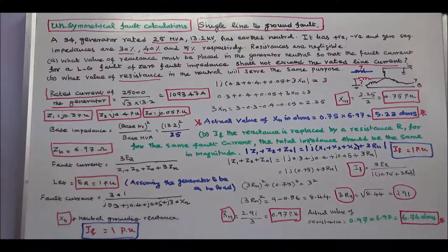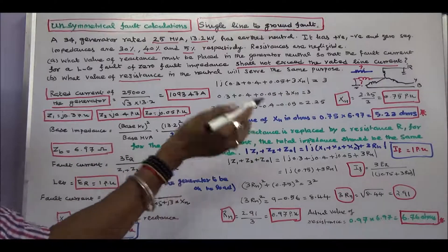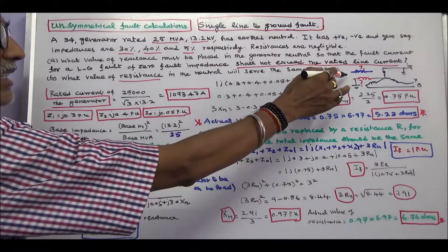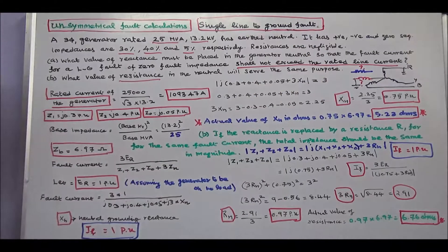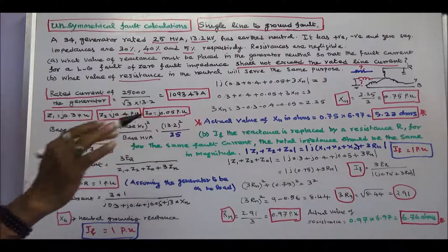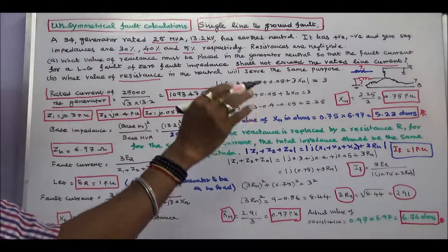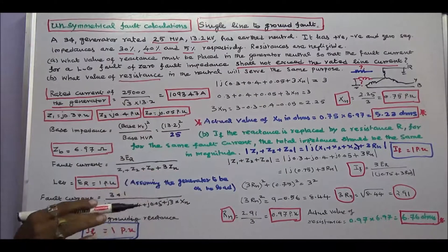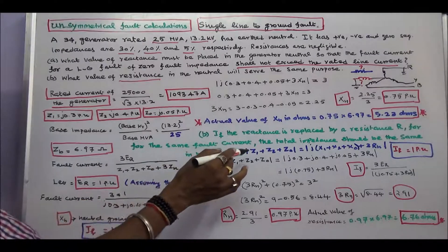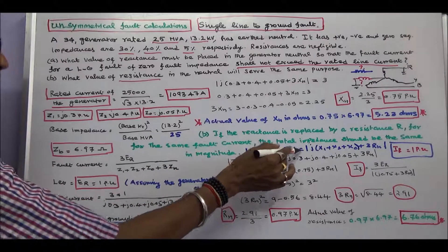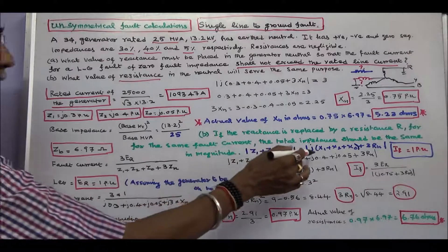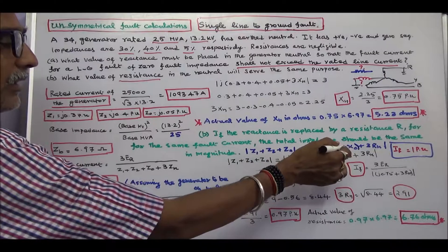The second question is, if the reactance is replaced by a resistance R for the same fault current, the total impedance should be the same in magnitude. That is, modulus of Z1 plus Z2 plus Z0 is equal to modulus of j into X1 plus X2 plus Xn.